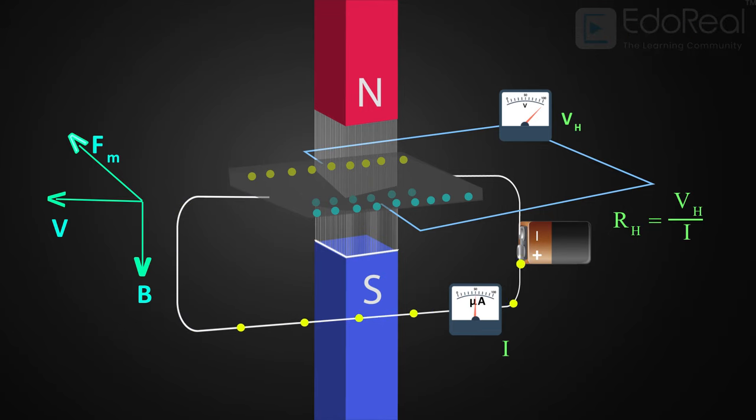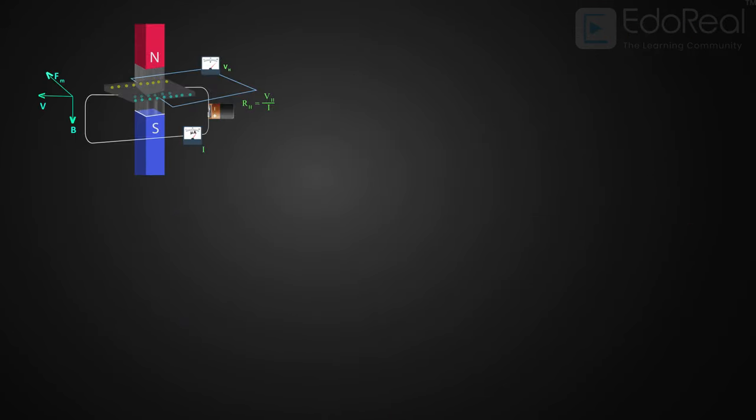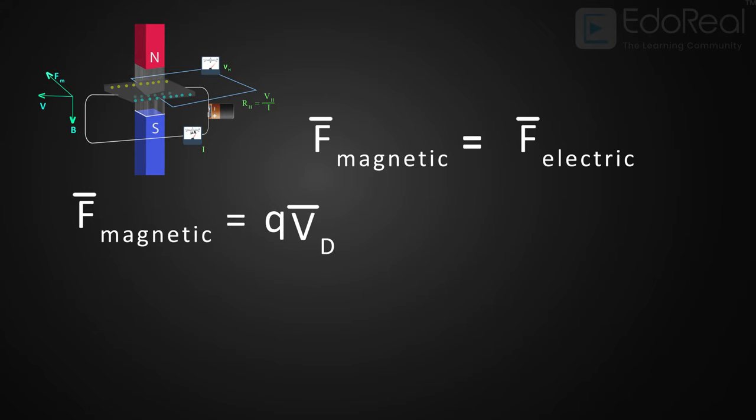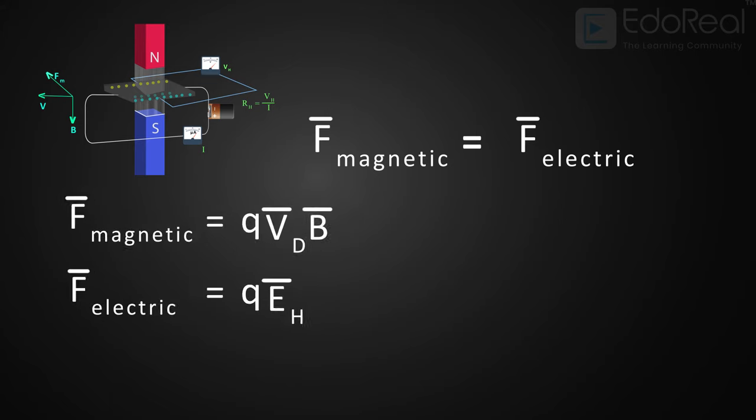Now let's examine the Hall effect situation when the magnetic force and the electric forces are equal. Magnetic force is equal to the quantity of charge multiplied by the velocity of electron and multiplied by the magnetic field that exists in this region. And electric force is equal to the quantity of charge multiplied by Hall electric force.